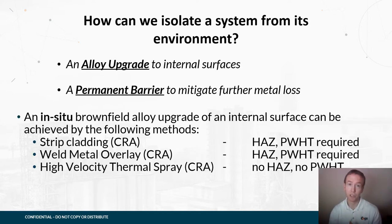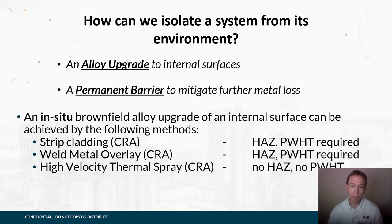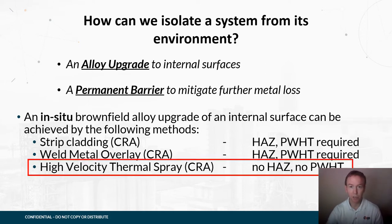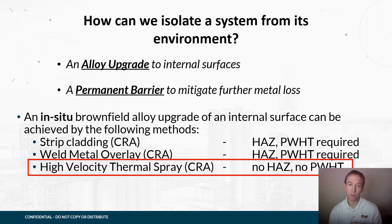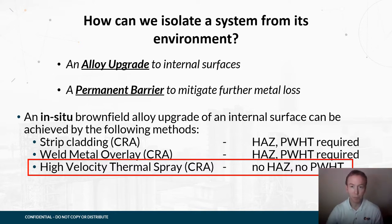There are different methodologies to install a field-applied alloy upgrade. You can do strip cladding, you can do weld metal overlay. This presentation is going to focus on high velocity thermal spray as a technique to install a high-nobility alloy. One of the principal benefits of high velocity thermal spray is we don't create a heat affected zone — for the substrate it's effectively a cold process. There's no requirement for post-weld heat treatment and no risk of creating differential metallurgy or harder phases in your substrate.